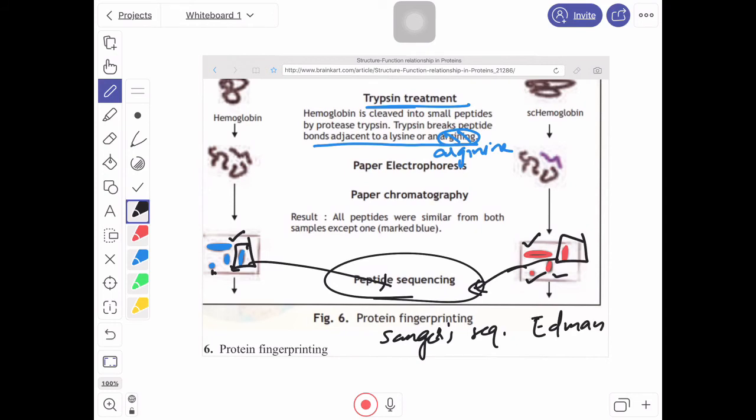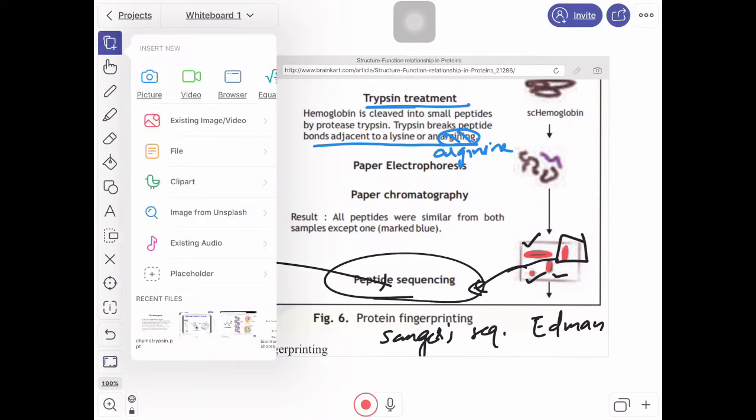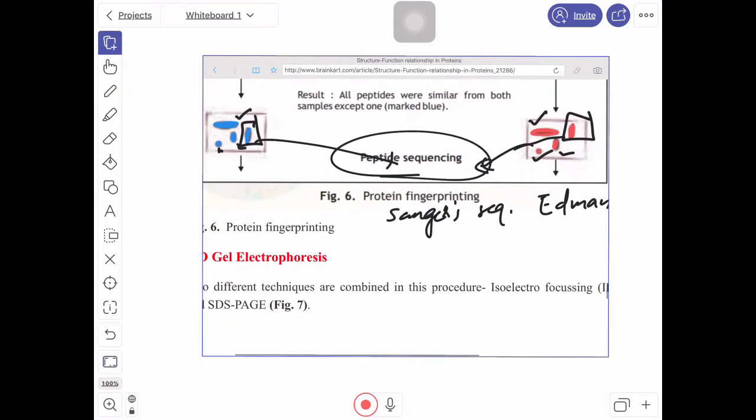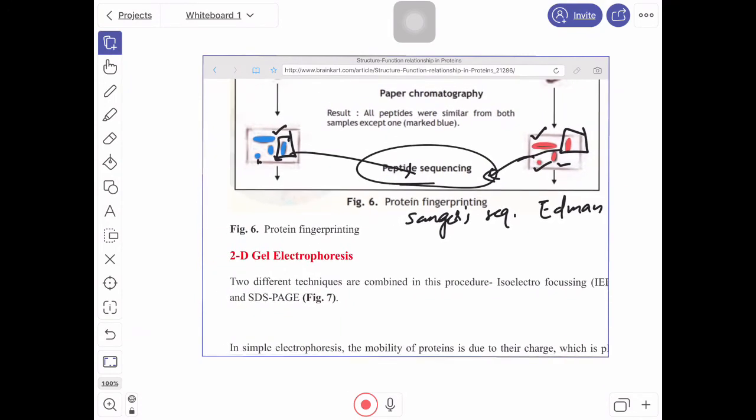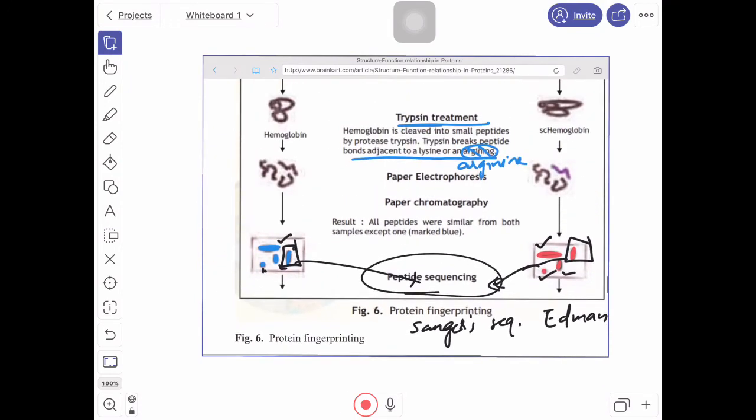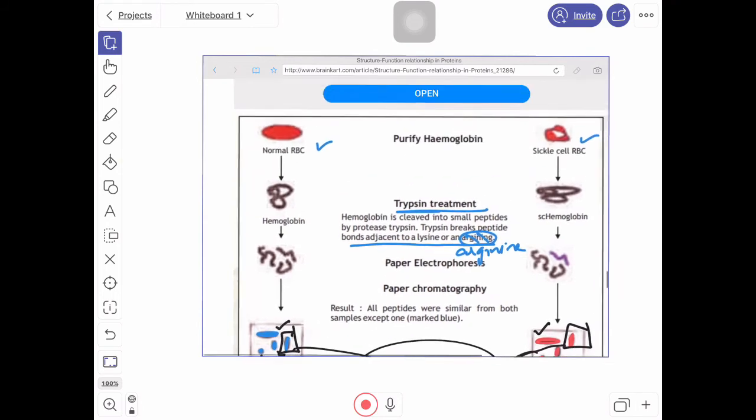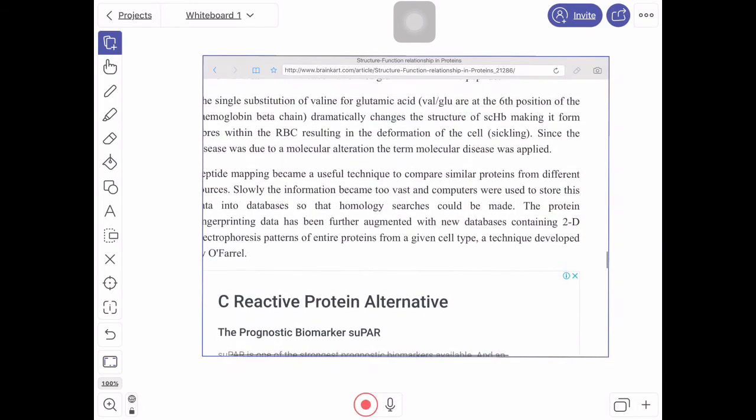Through this manner, they have sequenced both the strands separately and it is found that there are some differences in these fragments. All other fragments are same, all other fragments and their sequences are same, but here the sequence is little bit different.